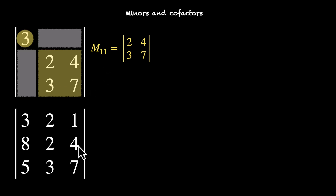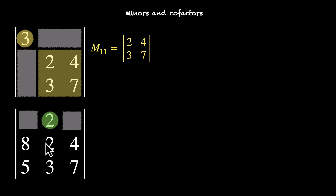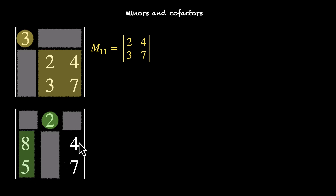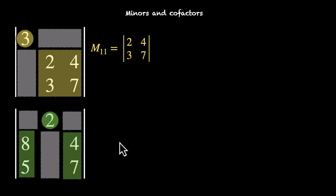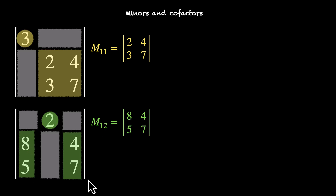Let's find some more minors. Let's find it for this element 2. Let's ignore all the others. 3 and 1 go away because they are in the first row, and then 2 and 3 go away. We are left with these two and these two. Combining them, we get a 2x2, and the determinant of that is our next minor, M12. M12 stands for first row and second column, so the minor corresponding to this element is the determinant of 8, 4, 5, and 7.